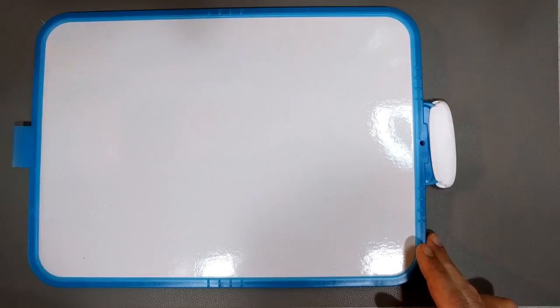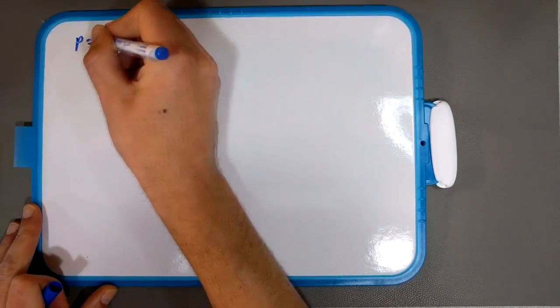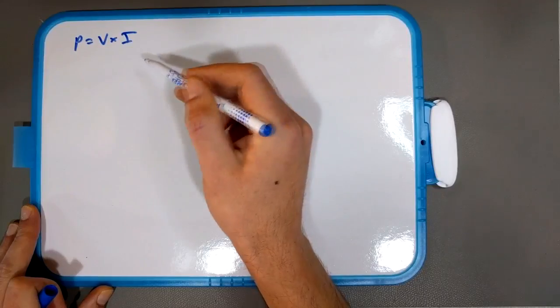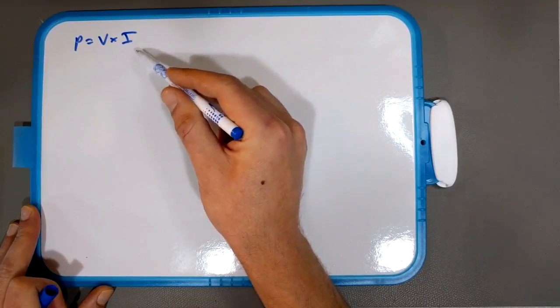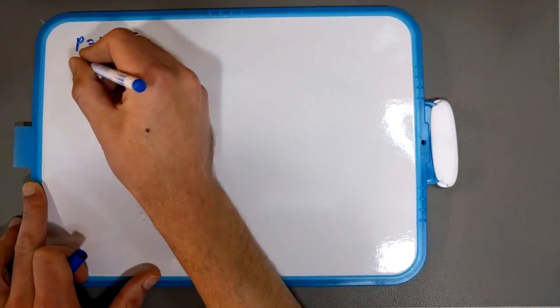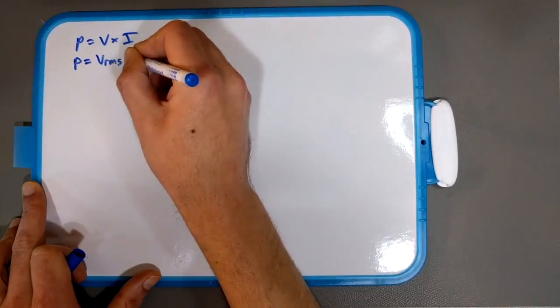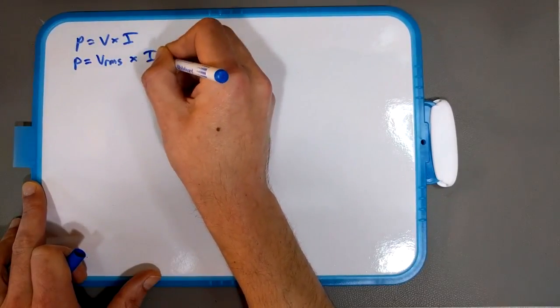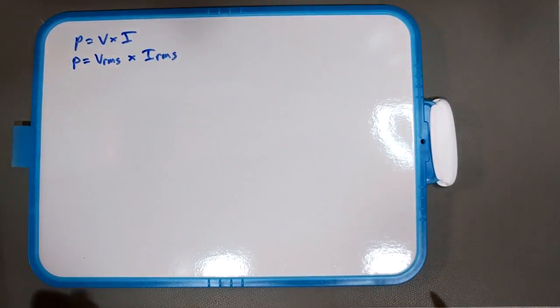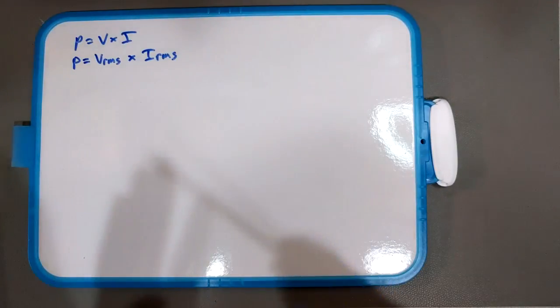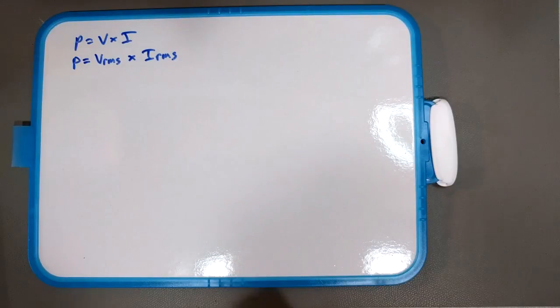The deal is that P equals VI, P equals V times I. For DC, it just works, right? Okay, well, how does it work for AC? Well, it works for AC if you do P equals VRMS times IRMS. Well, what the heck is RMS? RMS is root mean square, and what that means is, yeah, let's just draw a picture because it'll make it a lot easier to understand.